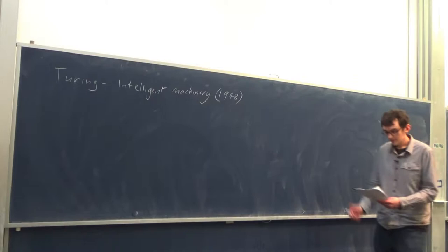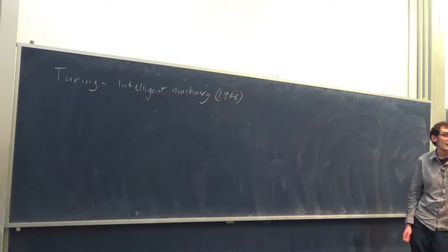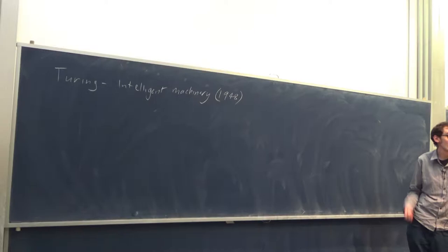To do this, he introduces some simple models which I'm going to be outlining in the later parts of the talk, and I'm also going to give you a modification of one of those models using some more modern notions. This paper predicts a lot of the fundamental concepts in machine learning. In particular, the model he gives is based on neurons, which predates neural networks. He also gives a simple version of reinforcement learning.